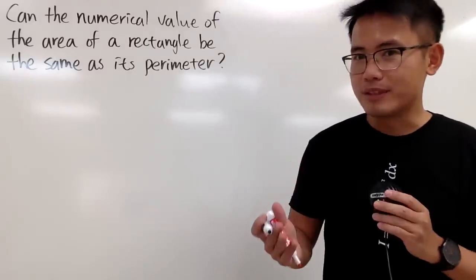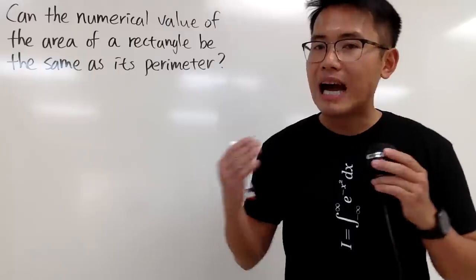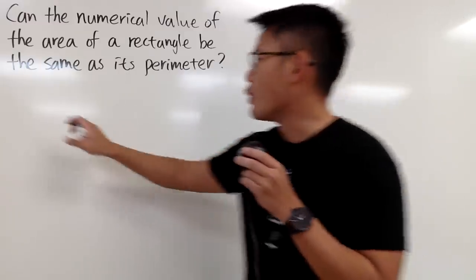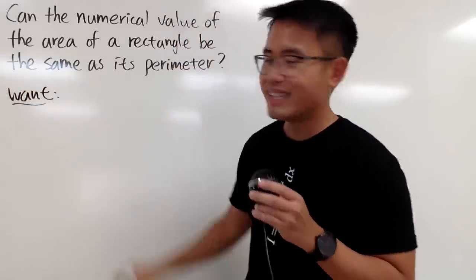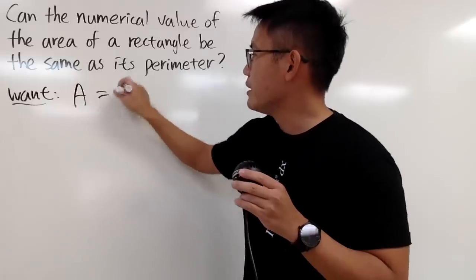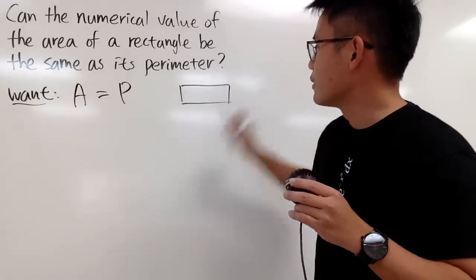I will show you guys a few examples so that the area of the rectangle and its perimeter have the same numerical value. So here we go. This is what we want: I want the area to be the same as the perimeter.